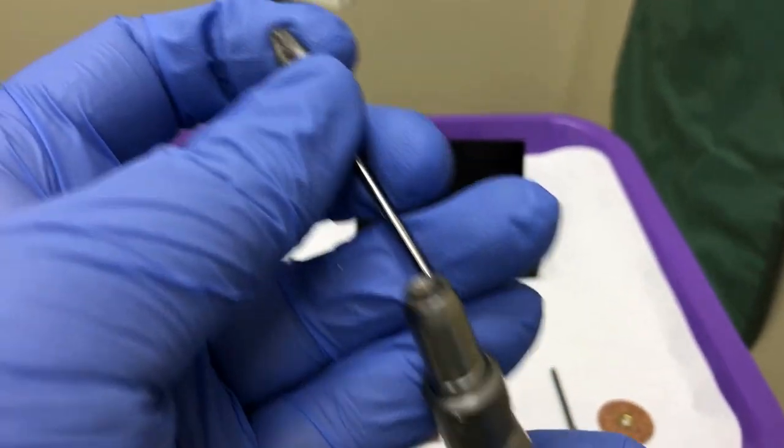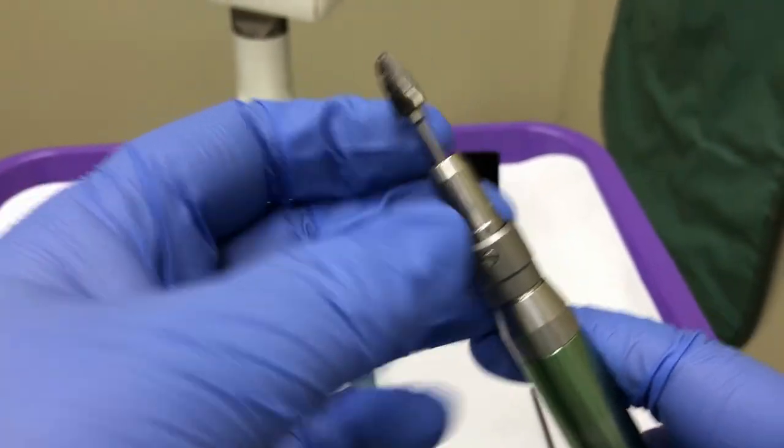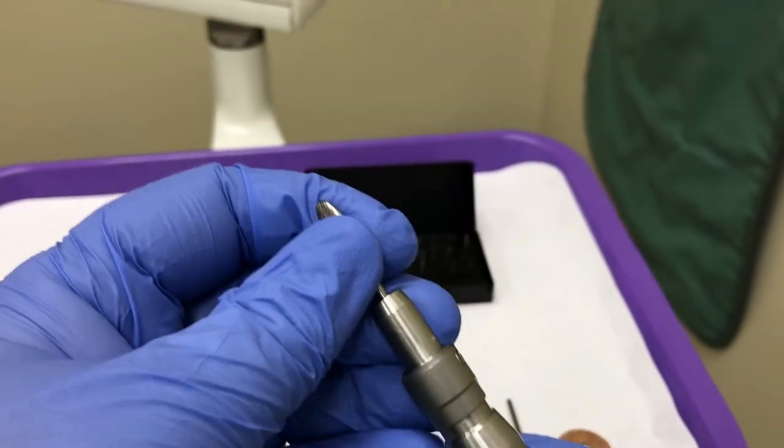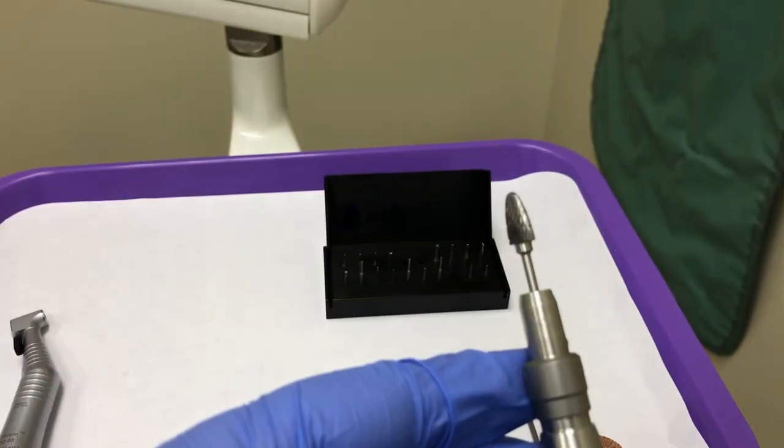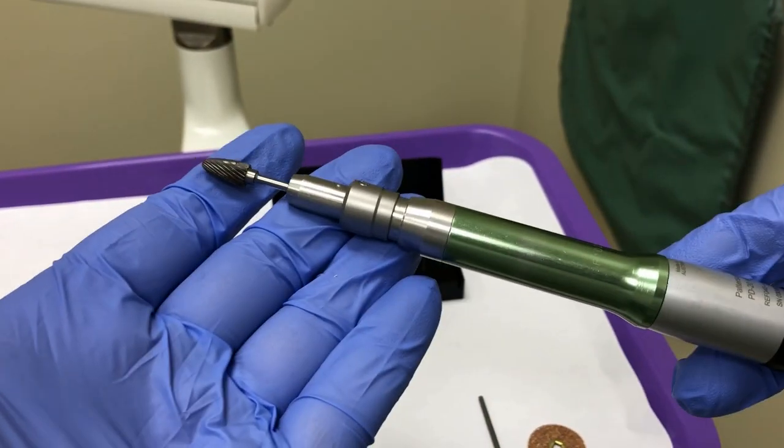To attach a laboratory burr, make sure the straight attachment is unlocked, and insert the burr into the opening. Once the burr is inserted, twist the collar to lock it and verify the burr is secure.